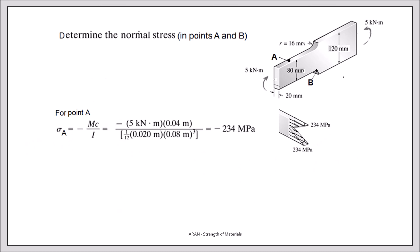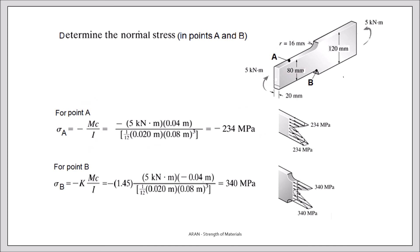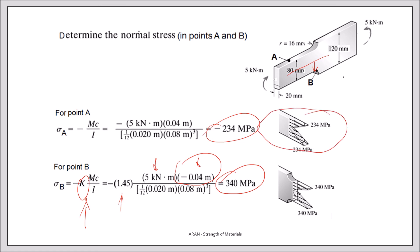For point A with no stress concentration: using the formula with positive moment, positive y (above neutral axis), gives sigma of minus 234. For point B: applying the stress concentration factor K = 1.45, with the same moment but distance below the neutral axis (negative y), gives a positive stress of 340 — higher than at point A due to stress concentration. The stress distribution at point A is linear, while at point B there is a concentrated, higher sigma at the fillet.